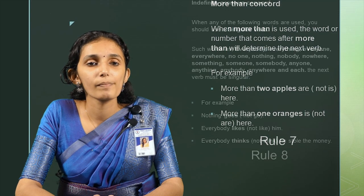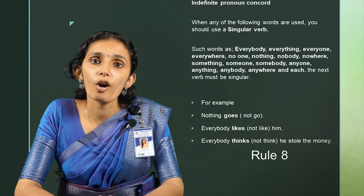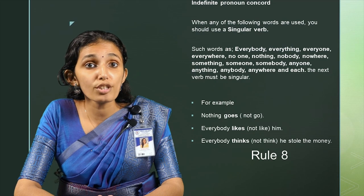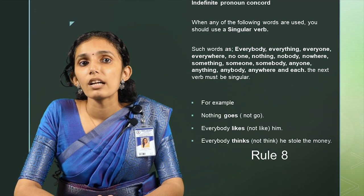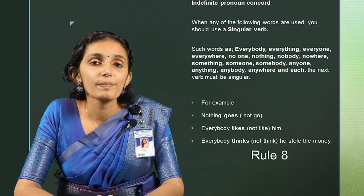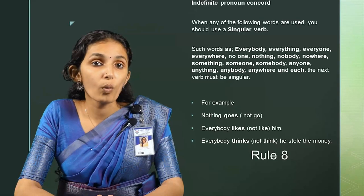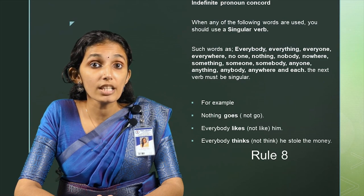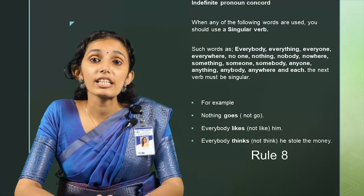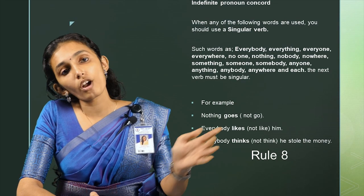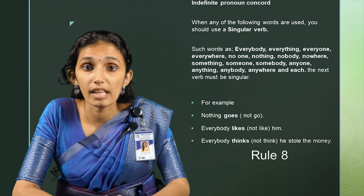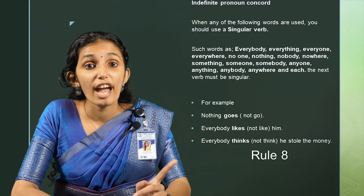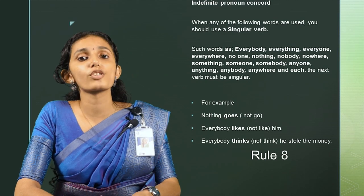Rule number 8: Indefinite pronoun concord. When any of the following words are used, you should use a singular verb: everybody, everything, everyone, everywhere, no one, nothing, nobody, nowhere, something, someone, somebody, anyone, anything, anybody, anywhere, and each. In all these cases, the next verb must be singular. Examples: 'Nothing goes,' 'Everybody likes him,' 'Everybody thinks he stole the money.'